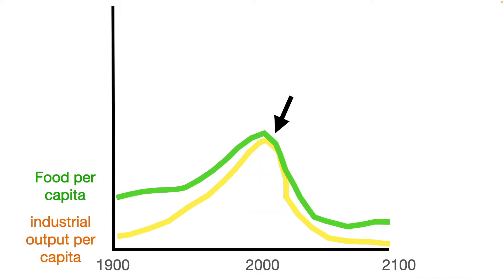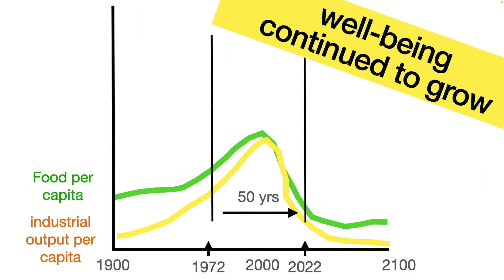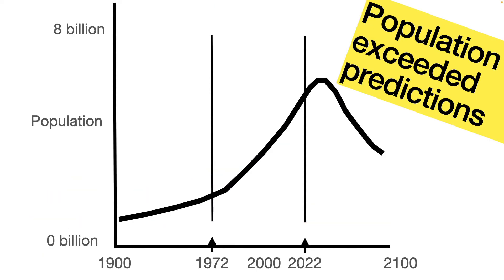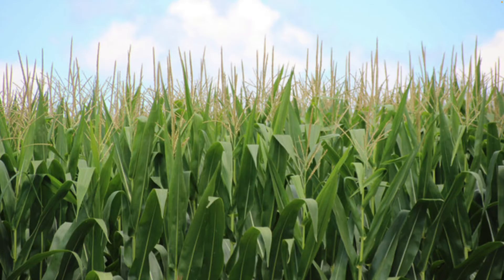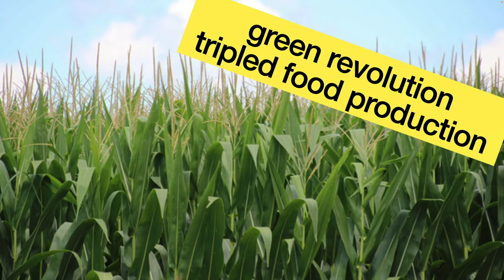Their book faced extreme criticism that advancing technology would prevent these limits. And for 50 years, the criticism was correct. Actual well-being on Earth grew faster and to higher levels than they reported. Population grew to 8 billion, 2 billion more and 20 years sooner than in their simulation. This super-growth was made possible by the Green Revolution's ability to triple food production, and that wasn't included in their simulation.